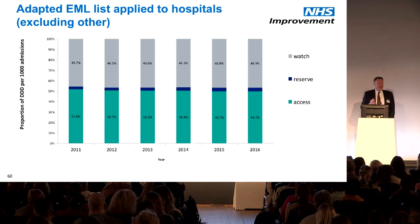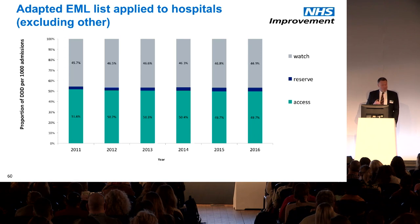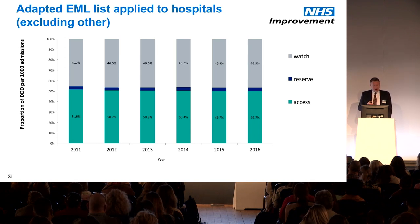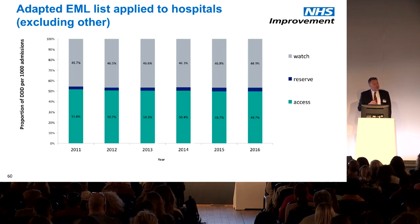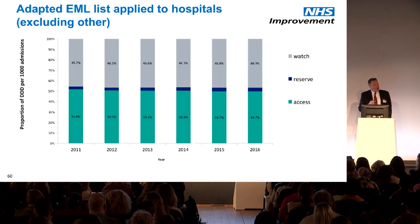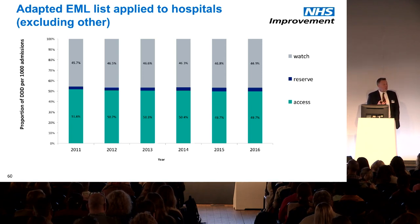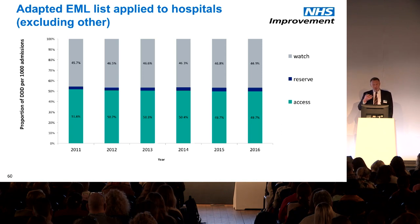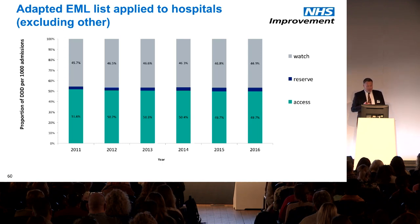Using the new Access, Watch, and Reserve lists, PHE plotted performance over time. From 2011 onwards, you can see a slow decline in the percentage of antibiotic use in the Access group — which is probably not what we want to see if we're to align with what the WHO is trying to achieve — while the Watch list has remained fairly steady.